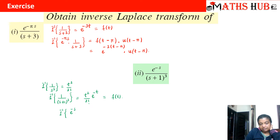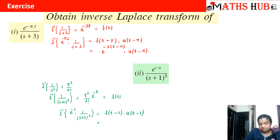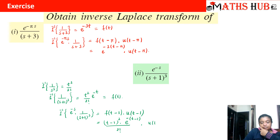Now when we multiply the exponential e raised to power minus s with 1 upon (s plus 1) whole cube, applying the second shifting property with a equal to 1, it becomes f(t minus 1) into u(t minus 1). Replacing t with t minus 1 in f(t), the answer is (t minus 1) whole square into e raised to power minus (t minus 1) divided by 2 factorial, multiplied by u(t minus 1).